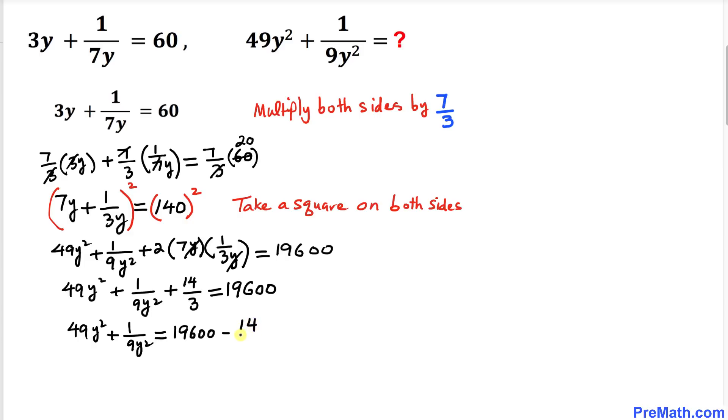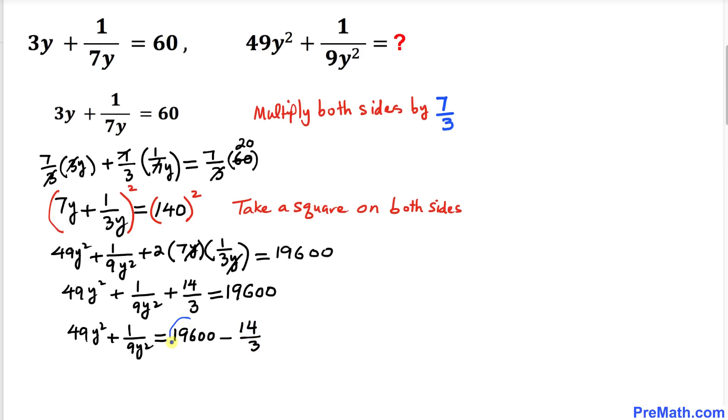Let's focus on the right-hand side. I've copied it down. I'll write 19,600 as a fraction by putting 1 underneath. Let me show you how we're going to simplify it using the crisscross method.